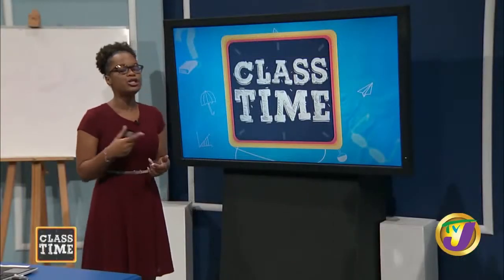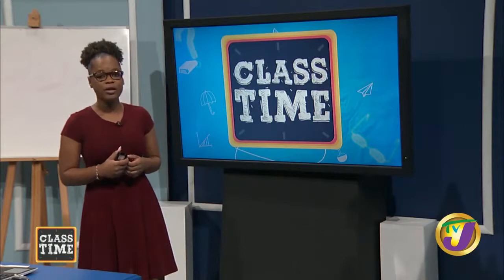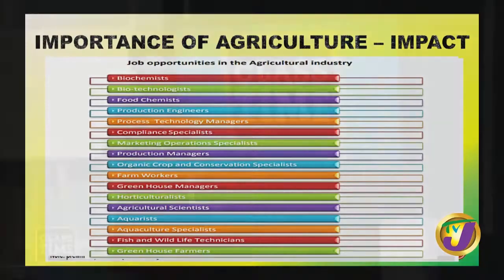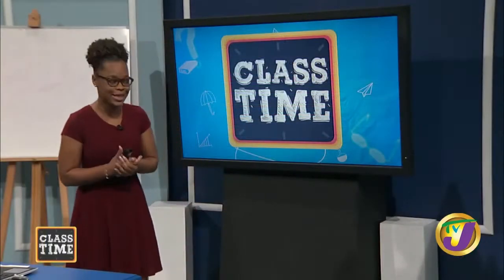Some non-traditional jobs involved in farming activity include biochemistry, greenhouse managers, aquarists, agricultural specialists, and greenhouse farmers — away from the typical farming activity of plowing land and weeding. These are new jobs emerging alongside technology, and agricultural research is also taking place.